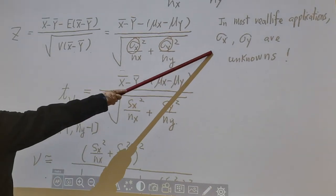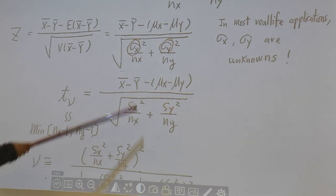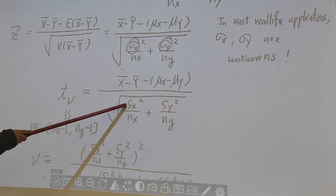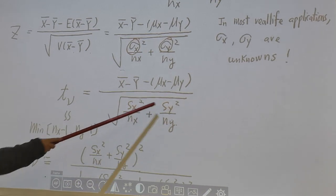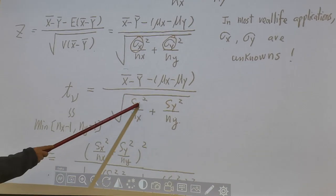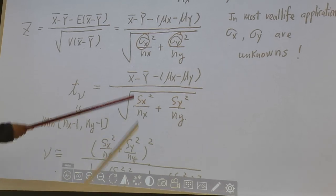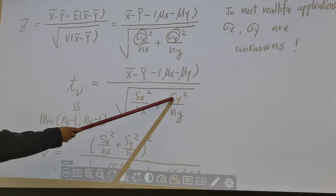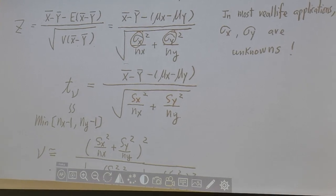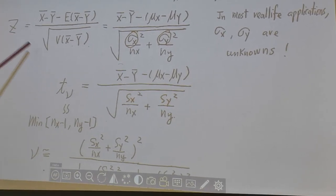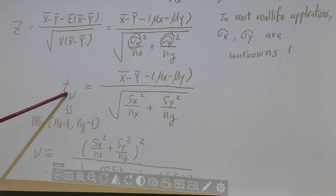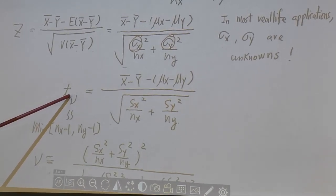But in most real-life applications, sigma x, sigma y, we don't know. So we estimate by sx, sy, that's the sample standard deviation from x and from y. After we replace sigma x by sx, sigma y by sy, the resulting statistic is no longer z, it becomes what? t, Student t distribution. And there are a couple ways to approximate its probability.